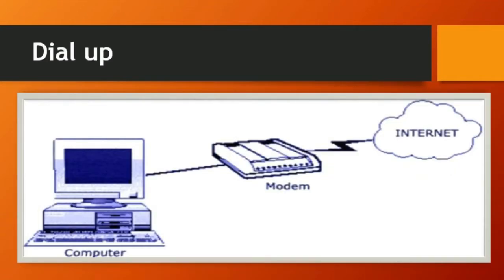How to get connected to the internet? There are many different ways to connect. The first one is dial-up. Dial-up is a connection where the internet user connects to the internet via telephone, using a Digital Subscriber Line — that is DSL. It is used even nowadays for dial-up connections.